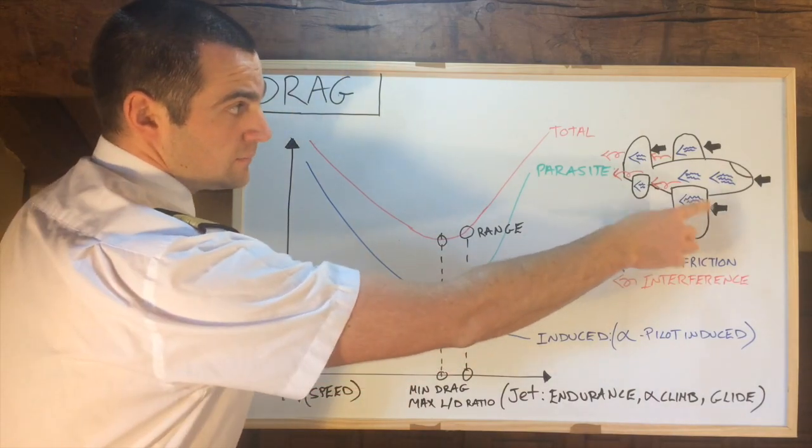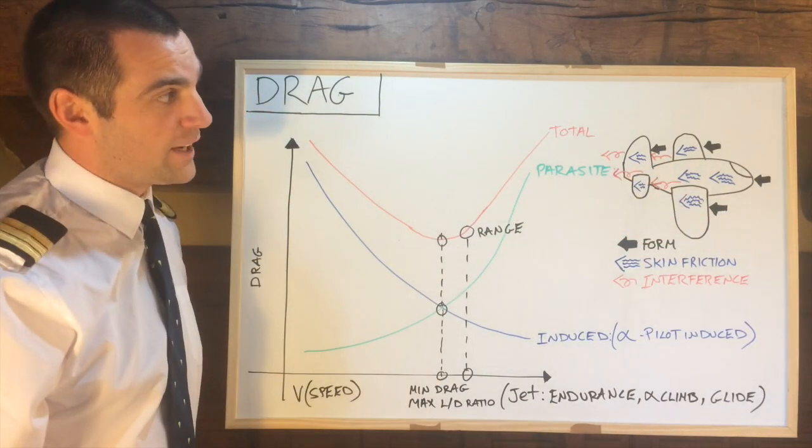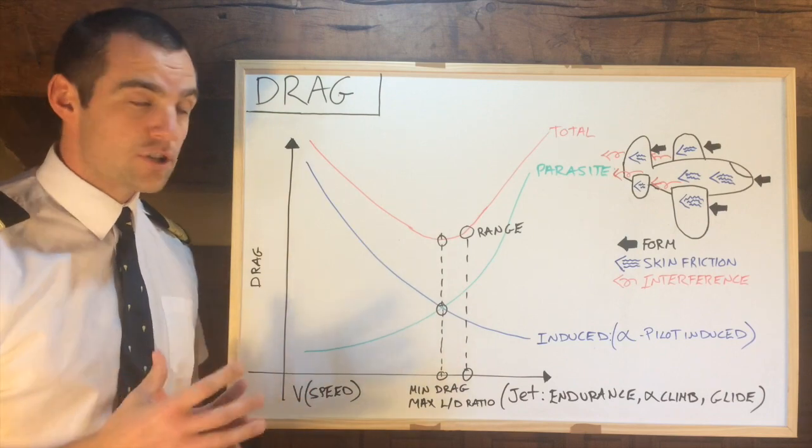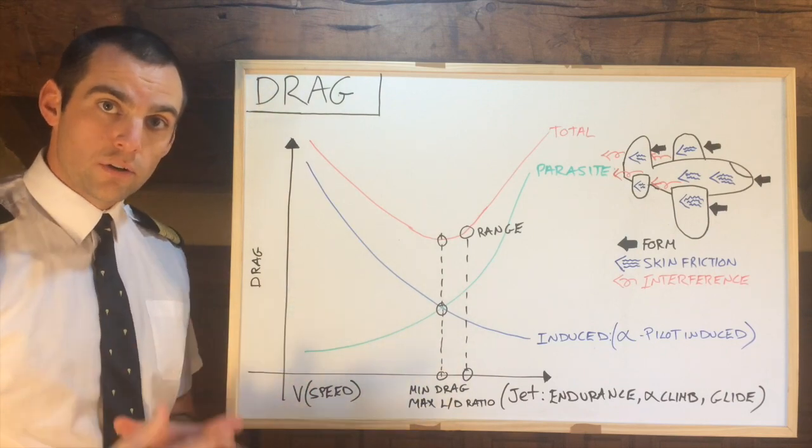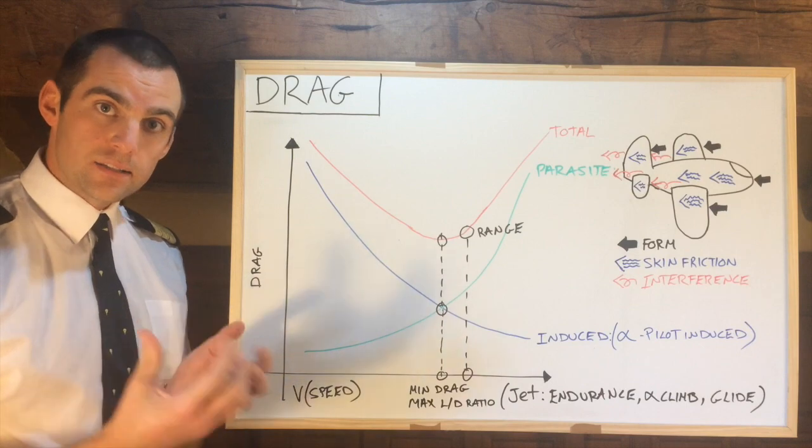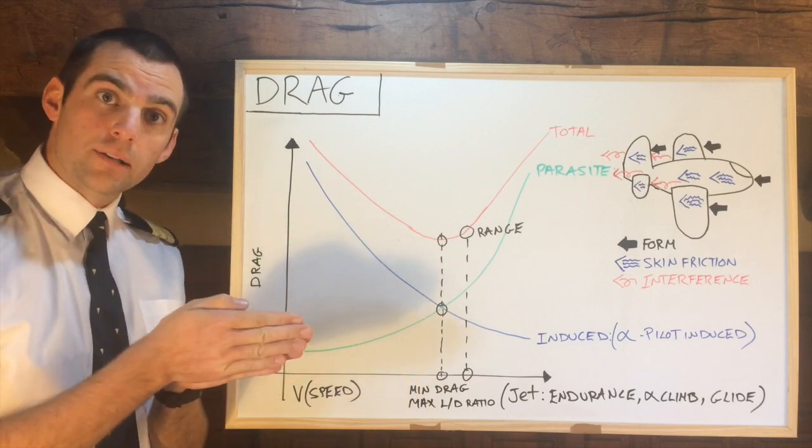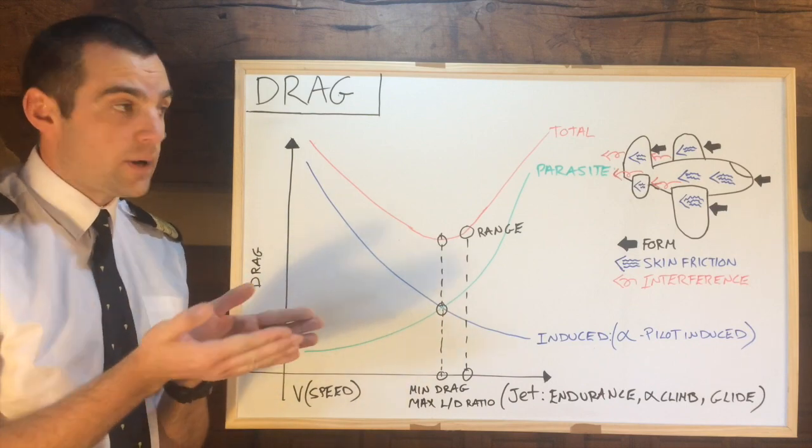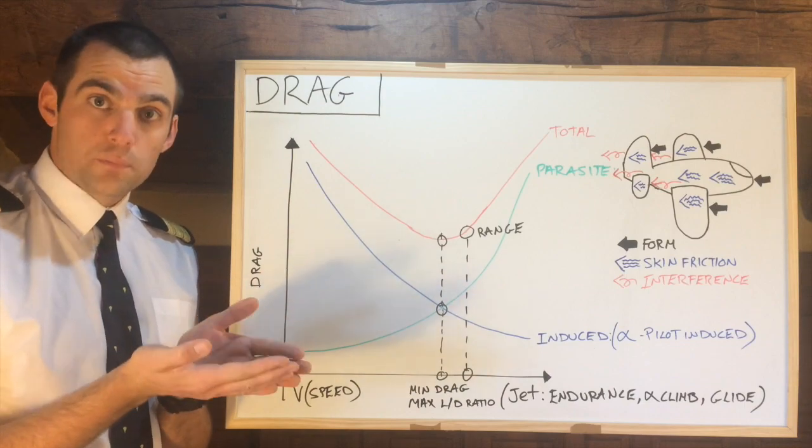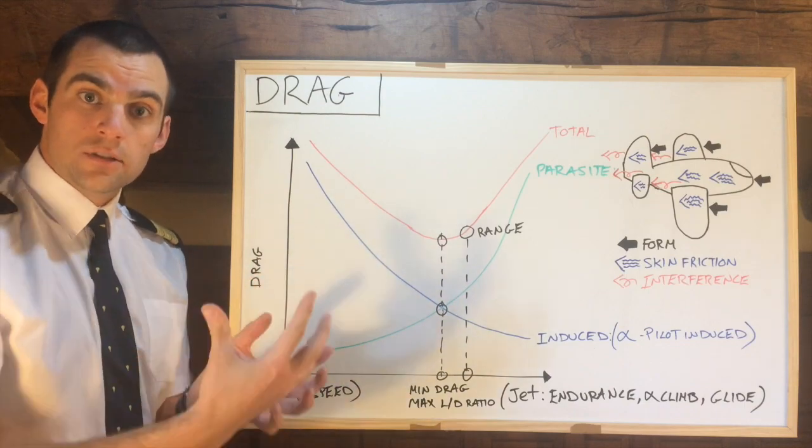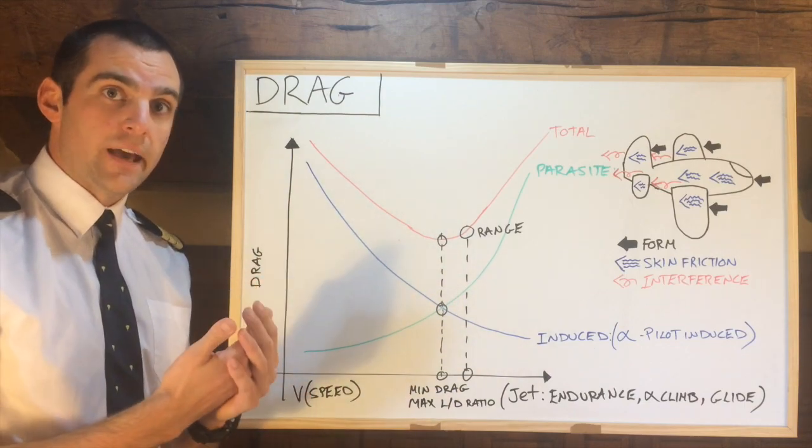So form drag, as you can see in my little crude sketch there of an aircraft, form drag is just down to the shape of the aircraft. Of course, if you imagine a square block flying through the air, that's going to have a lot more drag than an aerodynamic bullet for example. However, a bullet still has some form of form drag due to its shape. So this is the shape interfering with the air. That's form drag.